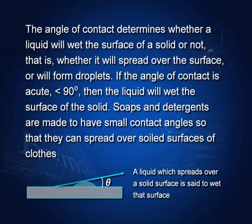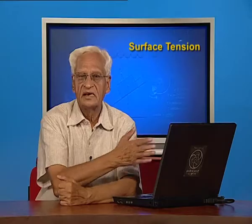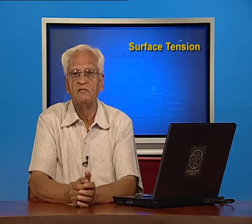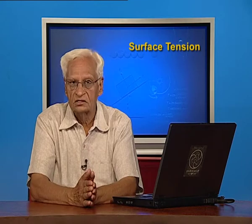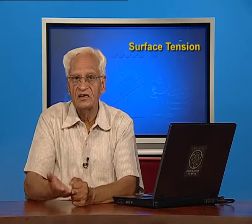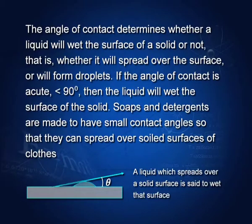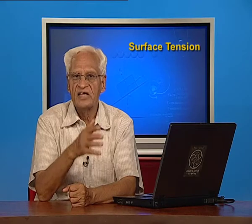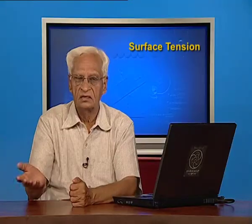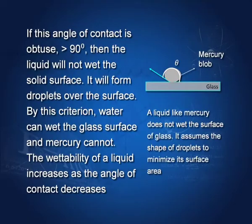The angle of contact determines whether a liquid will wet a surface or not. If water is able to spread on glass, it will wet it; if not, it will not. If the angle of contact is less than 90 degrees, it will wet, and it will wet more if the angle is smaller. If the angle of contact is larger than 90 degrees, it will not spread on the solid and therefore will not wet.